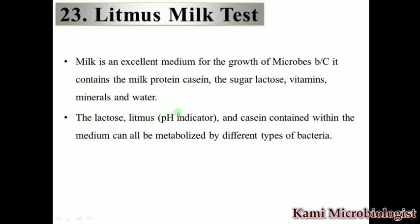Another important thing is that litmus milk contains litmus, which is the pH indicator. Due to this pH indicator we can identify the bacteria — when it is pink in color it means acid is produced; when it is purple in color it means an alkaline reaction will occur.